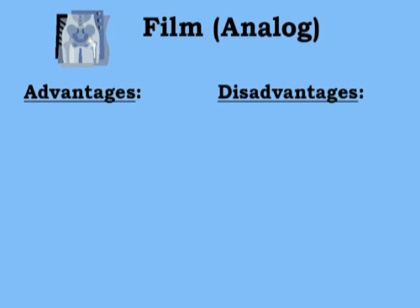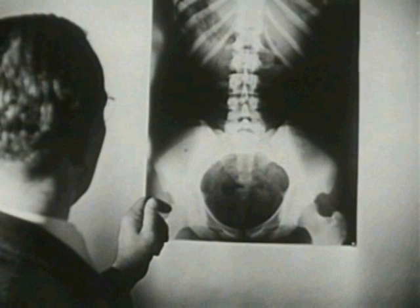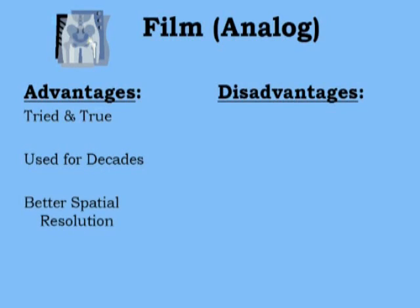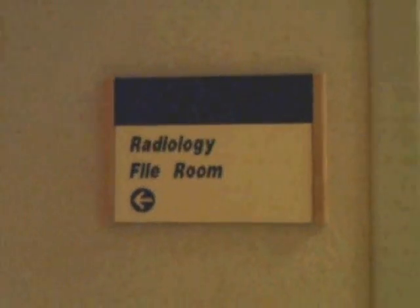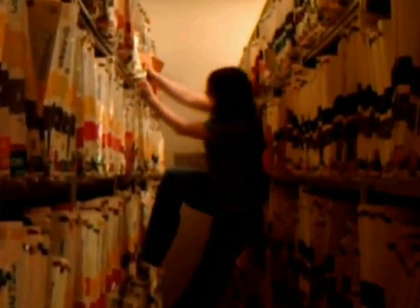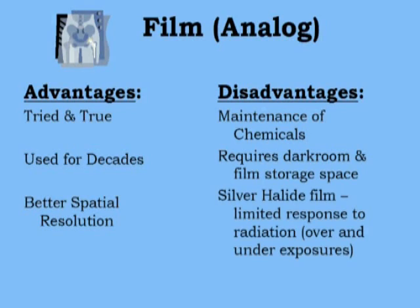All three systems have their own distinct advantages and disadvantages. Some of the advantages of traditional film screen is that they are tried and true and have been used for decades. Some of the disadvantages of traditional film include the chemicals must be stored, refreshed and disposed of periodically and properly. Often they take up a darkroom, which takes up valuable real estate. Film is also difficult to store.